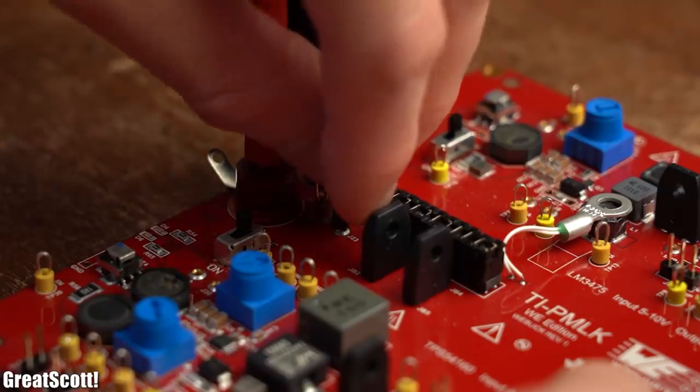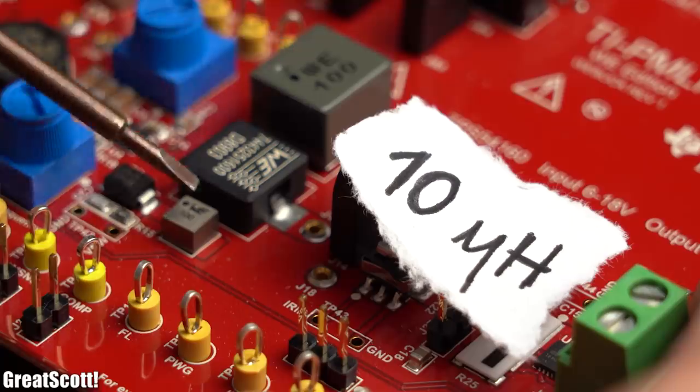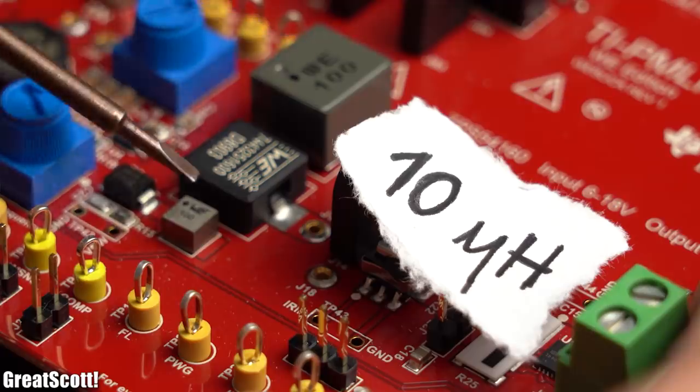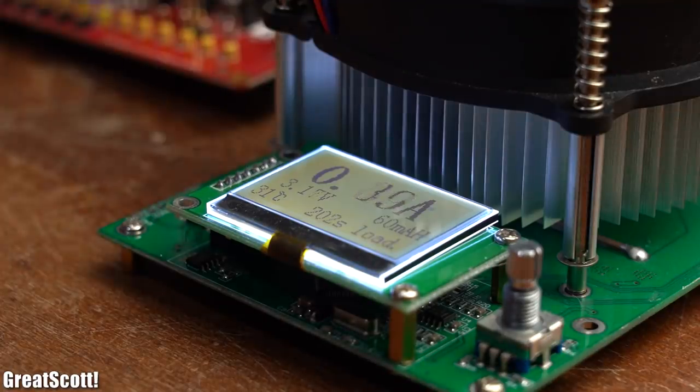With that being said, we can move on to the second buck converter circuit which coincidentally uses a big and a small coil with the exact same inductance value of 10 microhenry. Both of them fulfill their job in the buck converter circuit without a problem.